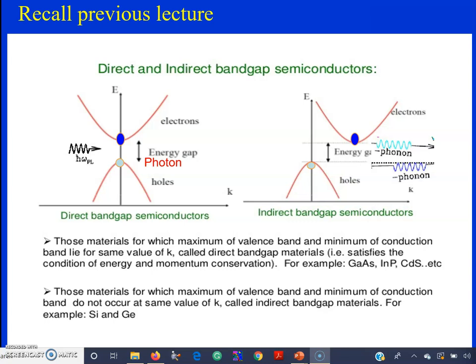These are the combination of third group and fifth group elements. Whereas in the case of indirect bandgap material, the maximum of the valency band and minimum of the conduction band have different momentum vectors. So if they combine, their energy is released in the form of a phonon — that is, vibrations — or in the form of heat. The examples for indirect bandgap materials are silicon and germanium.